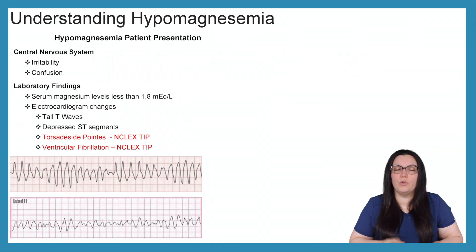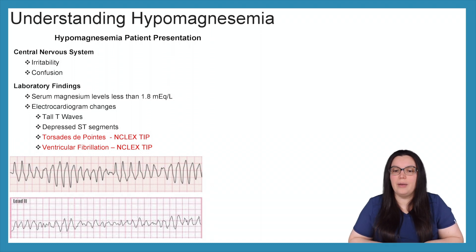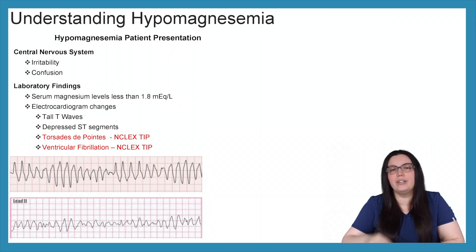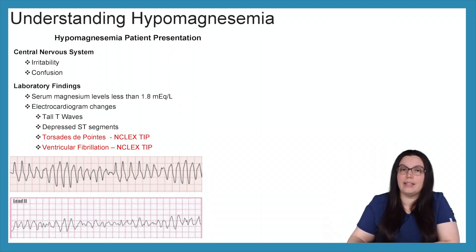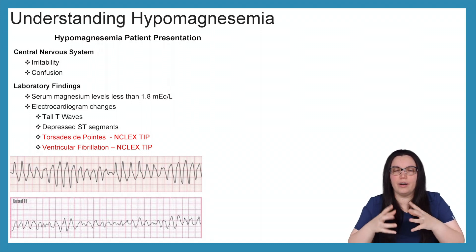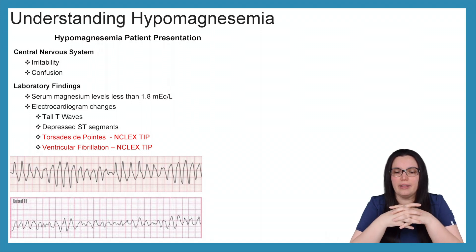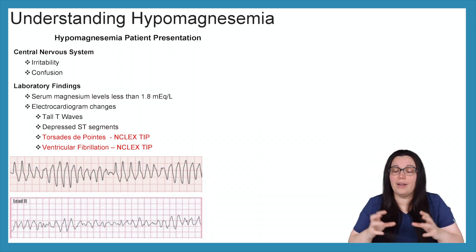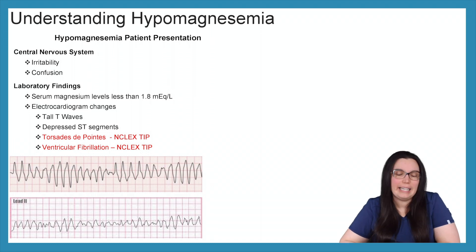In the central nervous system, patients will have irritability and confusion. Laboratory findings include serum magnesium levels less than 1.8 milliequivalents per liter and ECG changes such as tall T waves and depressed ST segments depending on severity. You may also see torsades de pointes — a spindling ventricular tachycardia — which is a huge NCLEX tip. In highly severe cases with significant magnesium loss, the ventricles can deteriorate into ventricular fibrillation.